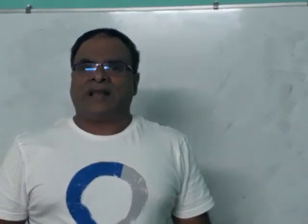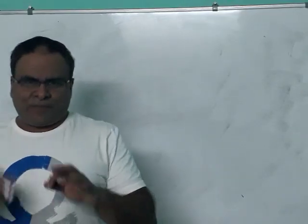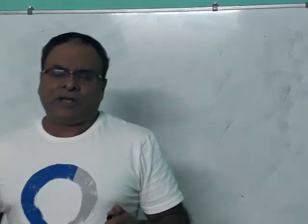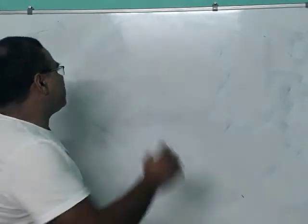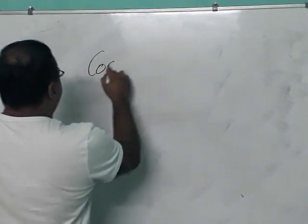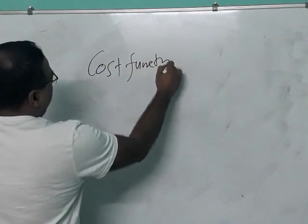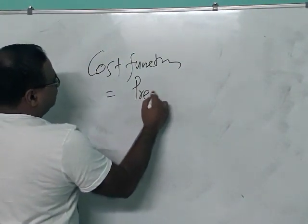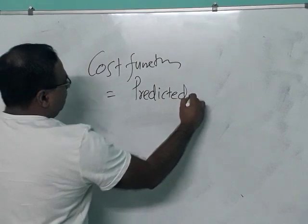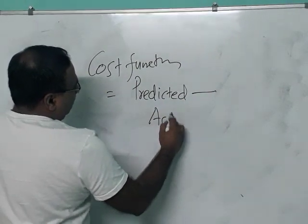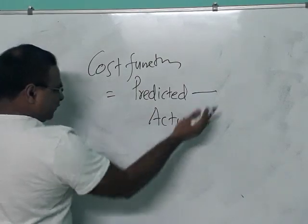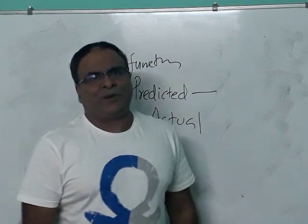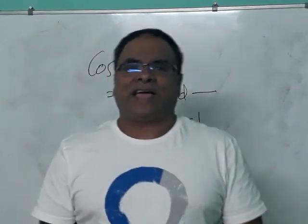The more advanced formulas and concepts of cost function we will discuss in the coming sessions, in the coming videos. For the time being, you can understand cost function is equal to error — that is the predicted minus actual value. This is the simplest representation of cost function.